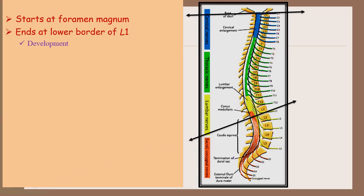During development, after 3 months of fetal life, the vertebral column grows faster as compared to spinal cord. Hence, the spinal cord is short by about 25 cm as compared to vertebral column.